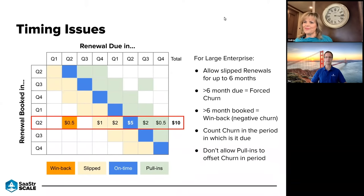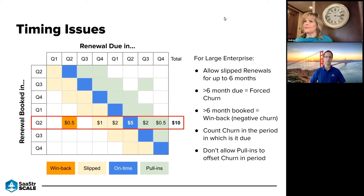Sometimes a slipped renewal could mean there's an upsell opportunity, but it could also mean the customer is figuring out whether they want to leave or still considering alternatives. So slip renewals can be an indicator of churn. Correspondingly, pull-ins can be a different indicator — a sign of the strength of our relationship and opportunities to add more into those deals to drive up the opportunity size.